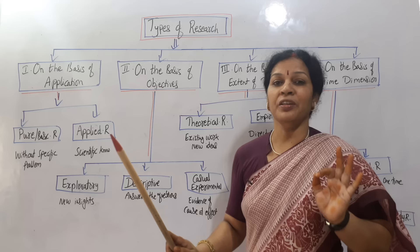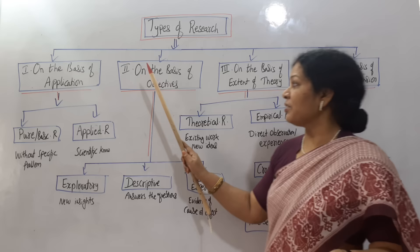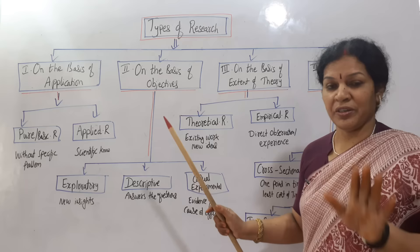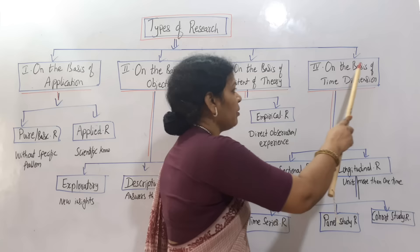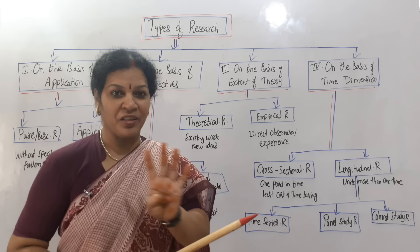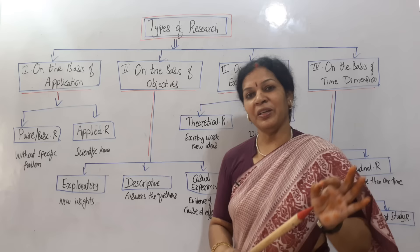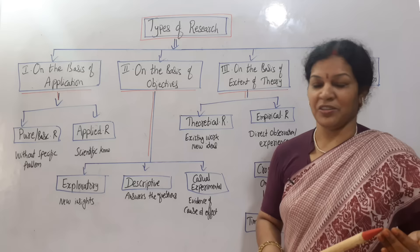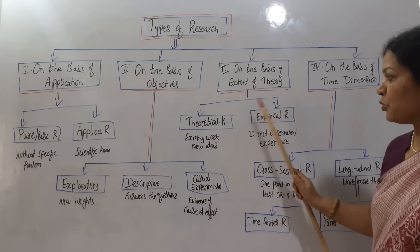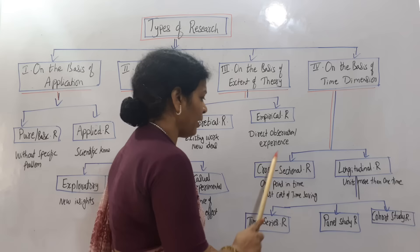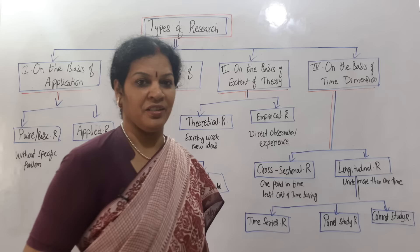Types of research are mainly four. First, on the basis of application — how do we apply. Second, on the basis of objectives — what is the object of the research. Third, on the basis of extent of theory — the extension of our theory work. Fourth, on the basis of time dimension — as per the time. Under each base you can divide into sub-types: application has two, objectives has three, extent of theory has two, and time dimension has two — cross-sectional and longitudinal — with longitudinal having three further sub-types.